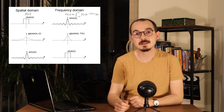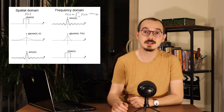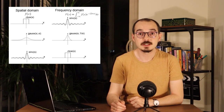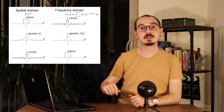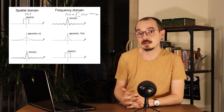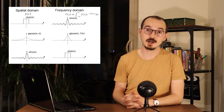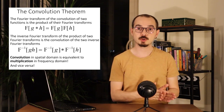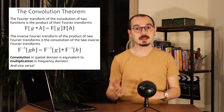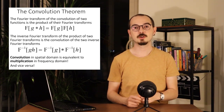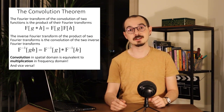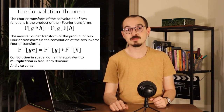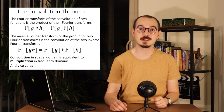Some very typical Fourier transform pairs we will see in 2D: the Fourier transform of a box function is called the sinc function, which oscillates with higher frequencies; and the Fourier transform of a Gaussian is another Gaussian. One very important theorem is the convolution theorem, which states that the convolution operation in the spatial domain is equivalent to multiplication in the frequency domain, and multiplication in the spatial domain corresponds to convolution in the frequency domain.